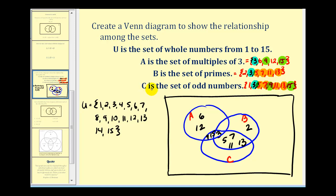Looking at set C, all elements have been placed except one, so one goes in the region belonging only to C. Finally, we check the even numbers to ensure every element of the universal set is accounted for. Two is in set B; four, eight, ten, and fourteen are not in any set, so they're listed outside all three circles; six and twelve are multiples of three already placed in set A.